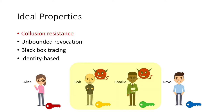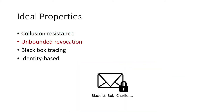There are a number of ideal properties we may want from a trace and revoke scheme. The first is collusion resistance: if multiple malicious parties like Bob and Charlie combine their keys to create a decoder box, we still want the tracing algorithm to identify at least one of them. The second is unbounded revocation: some existing schemes require specifying a bound on the revocation list size at setup, but ideally we want to support an unbounded size revocation list.